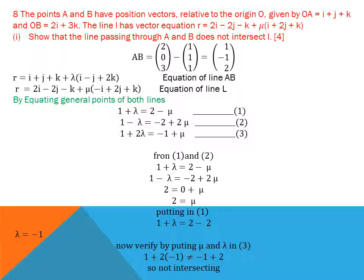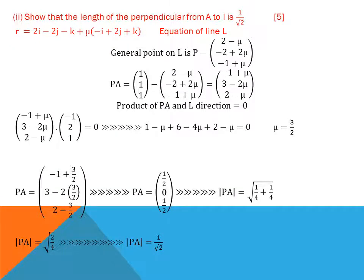The general point of line AB is (1+λ)i + (1−λ)j + (1+2λ)k and the general point of L is (2−μ)i + (−2+2μ)j + (−1+μ)k. Equating and solving equations 1 and 2 simultaneously gives μ = 2 and λ = −1. Substituting into equation 3, the left and right sides are not equal, proving the lines do not intersect.